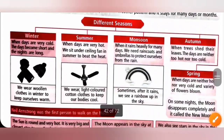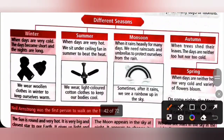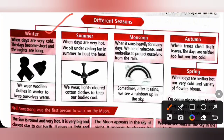Different seasons. Winter — when days are very cold, the days become short and nights are long. We wear woollen clothes in winter to keep ourselves warm. Summer — when days are very hot, we sit under a ceiling fan in summer to beat the heat. We wear light colored cotton clothes to keep our body cool.